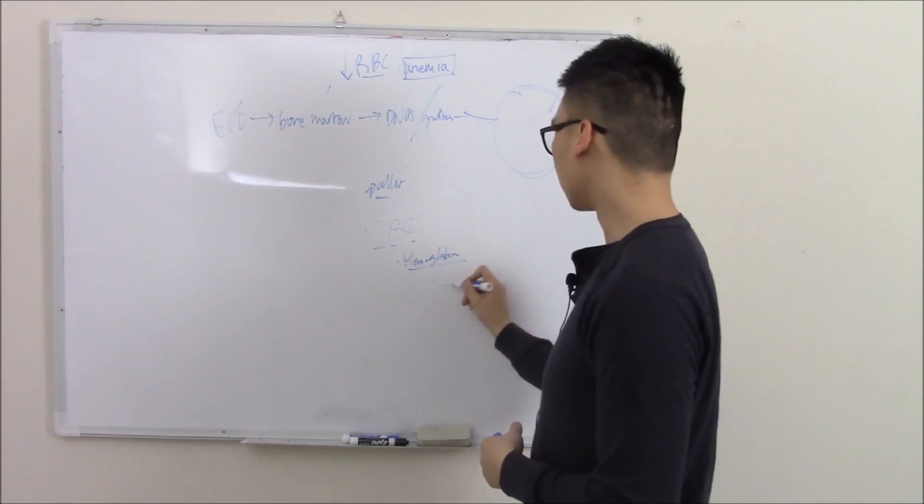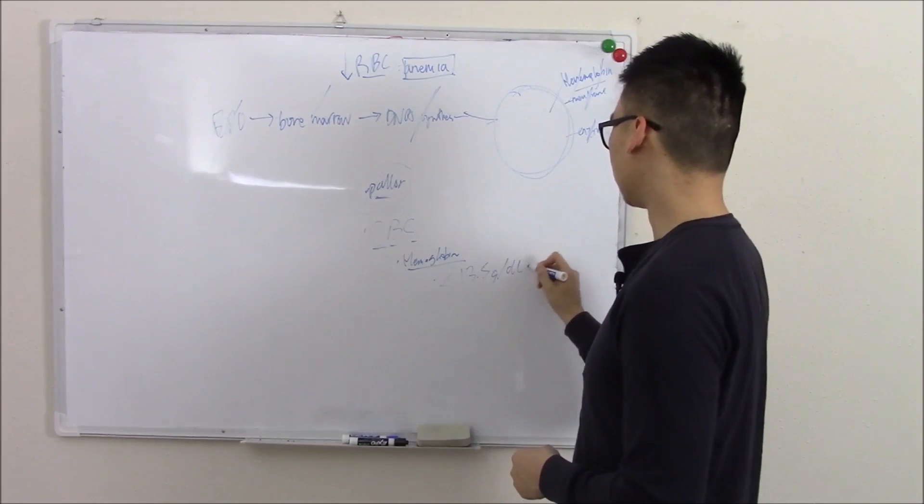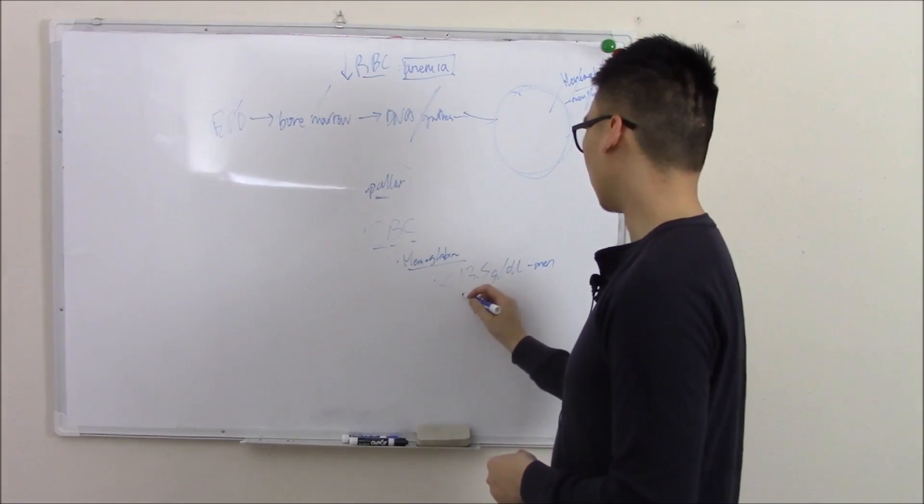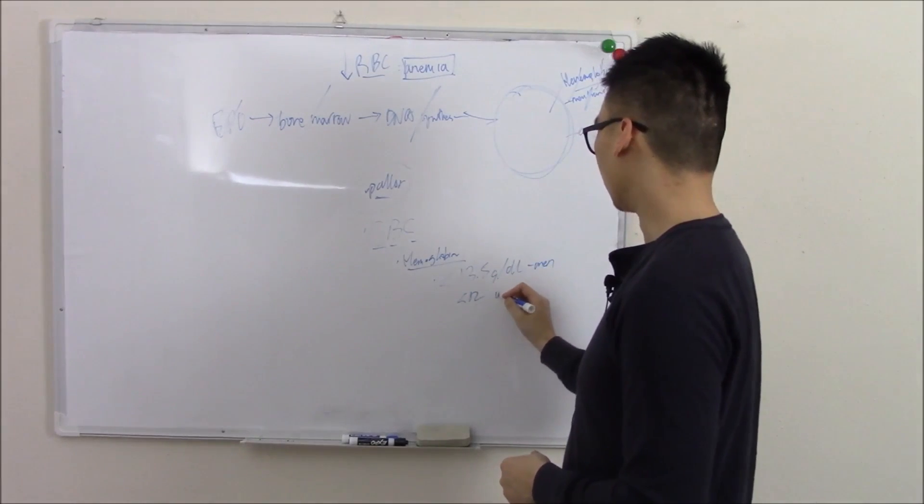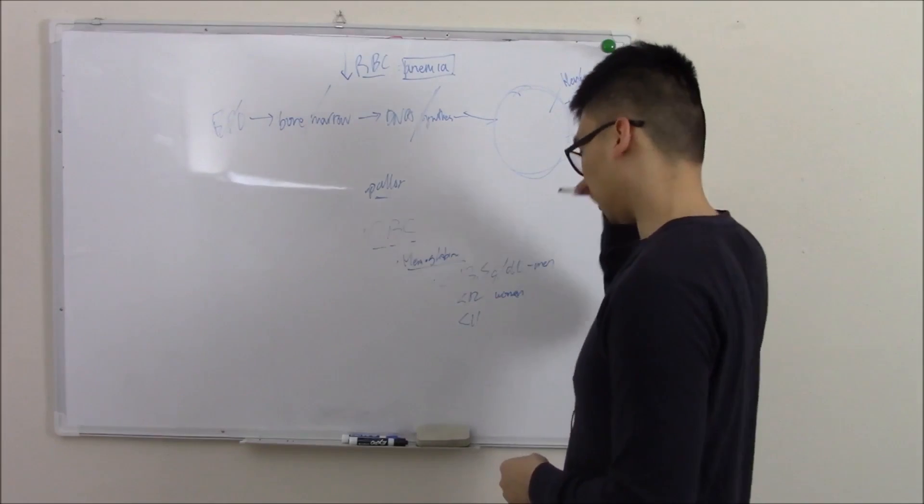Here's the values we're looking for. So under 13.5 grams per deciliter in men, under 12 in women due to their menstruation. And if they're pregnant, under 11, because when you're pregnant,